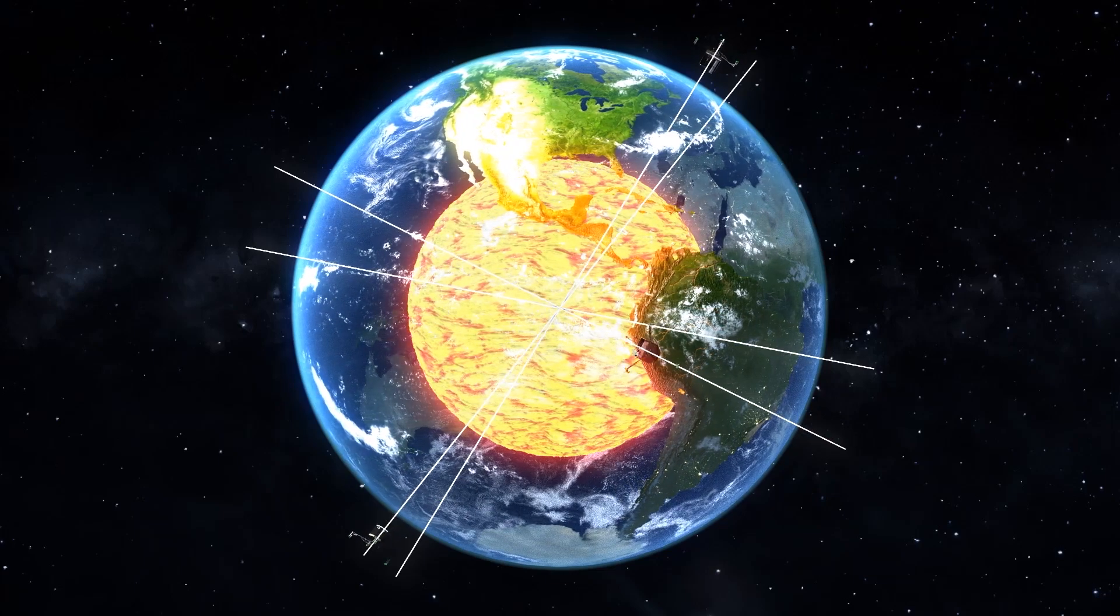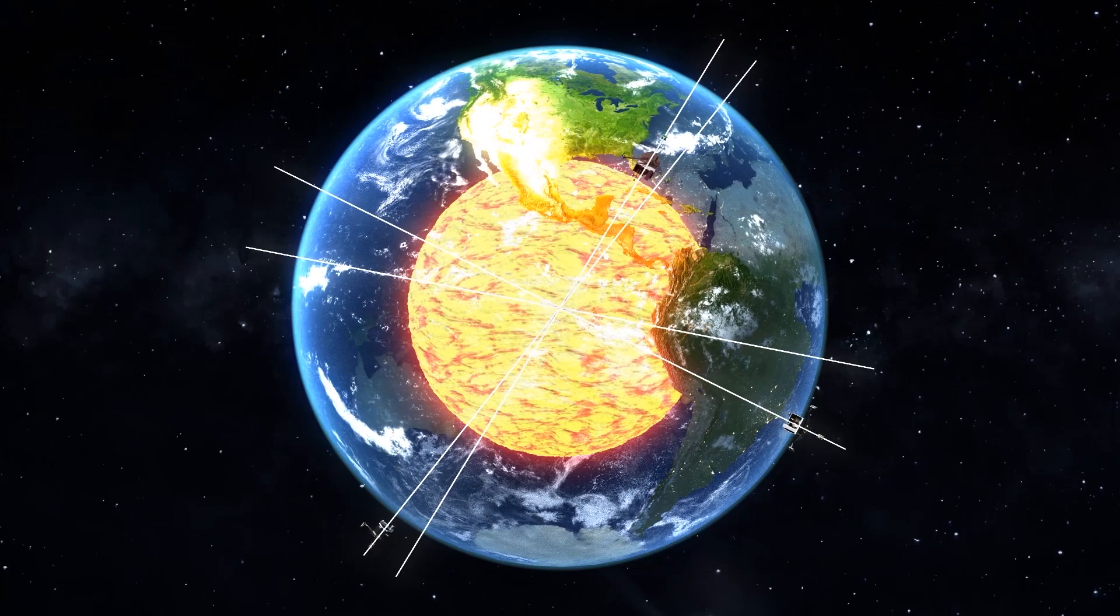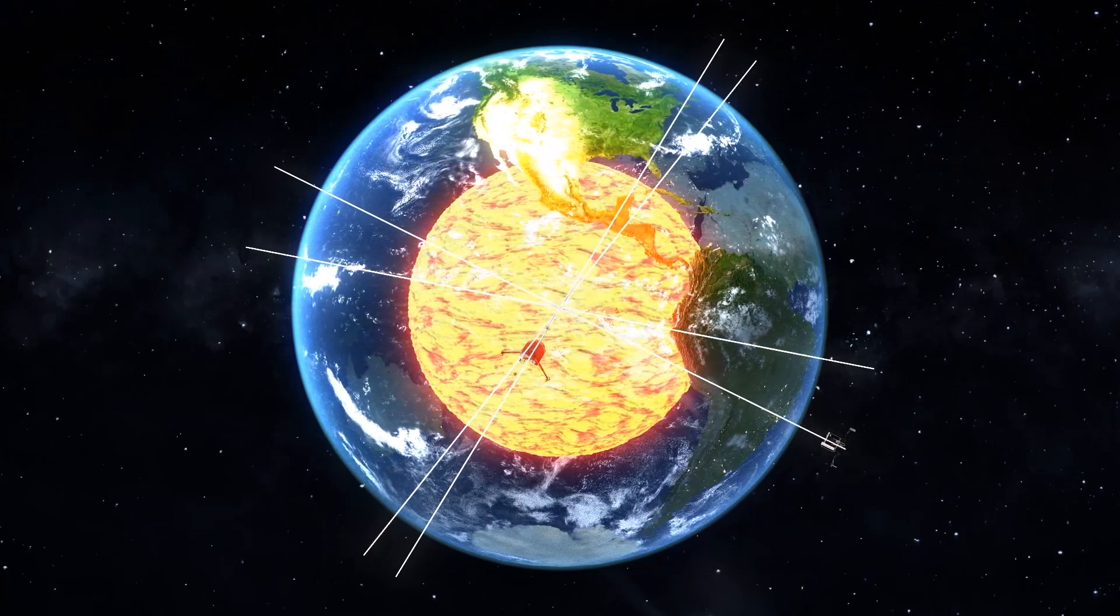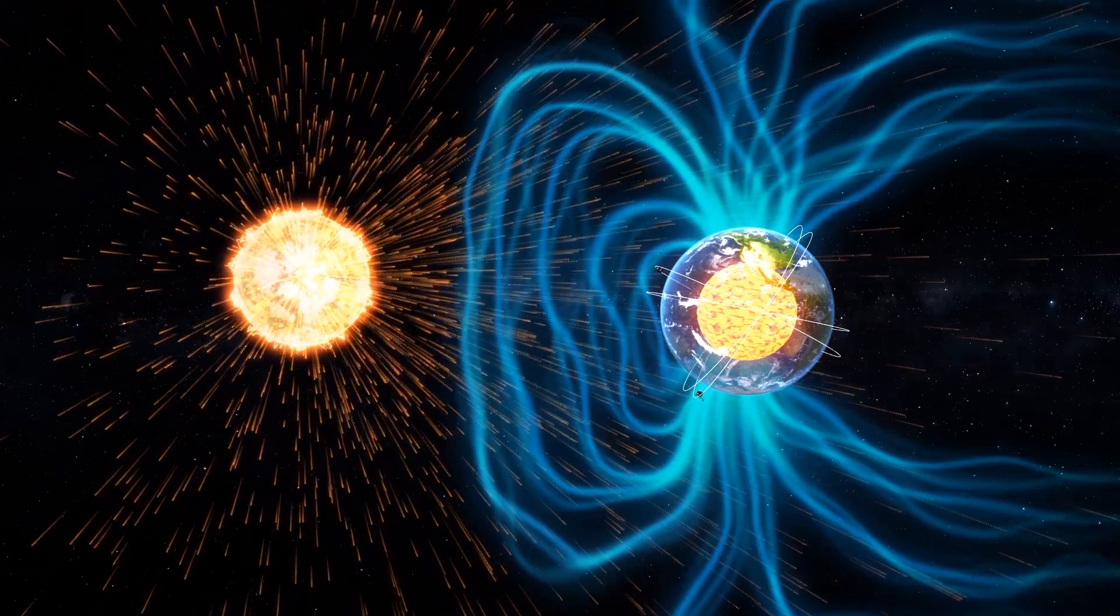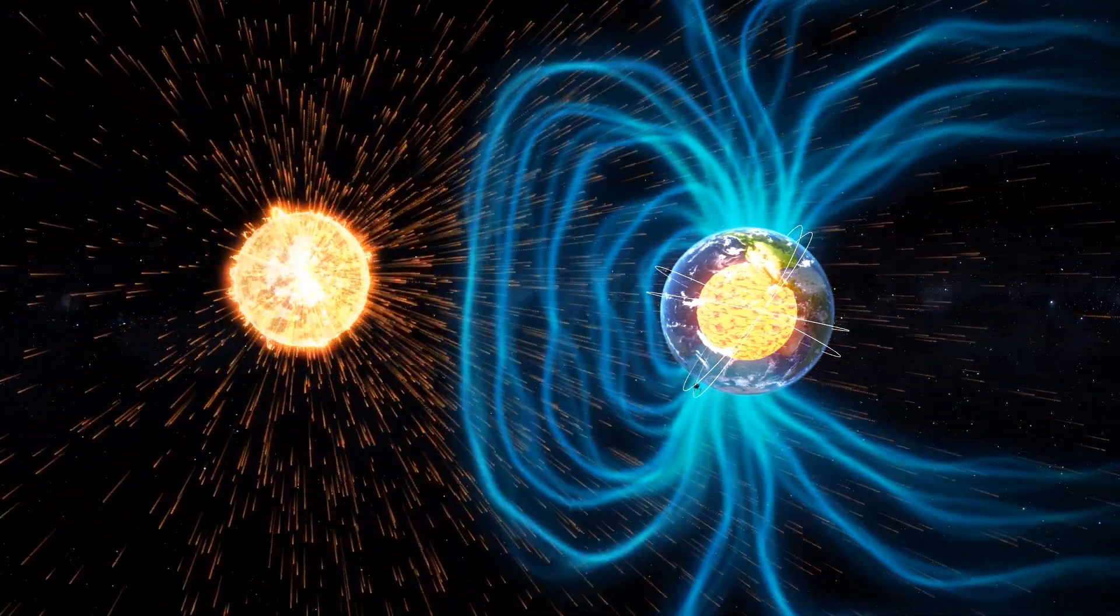The European Space Agency, or ESA, reports that clusters of spacecraft it had launched in recent years are showing that solar radiation is interacting with the Earth's core to create harmful electromagnetic microstorms on Earth.